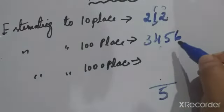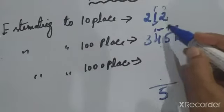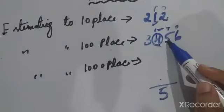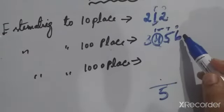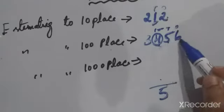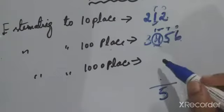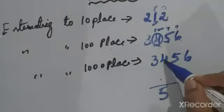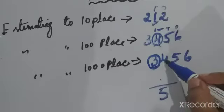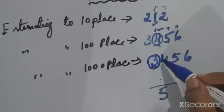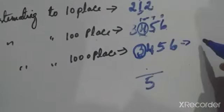Now, for the number 3456, we round off to the hundreds place. Hundreds place digit is 4. We check the next digit — the tens digit — which is 5. Since 5 or above means we approximate to the next number, 456 is nearest to 500, so 3456 rounded to hundreds place is 3500. For thousands place rounding of 3456, the thousands digit is 3 and the next digit is 4 — since 4 is less than 5, we approximate down.